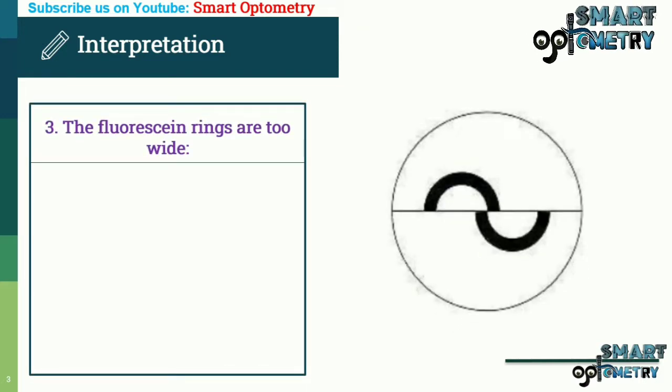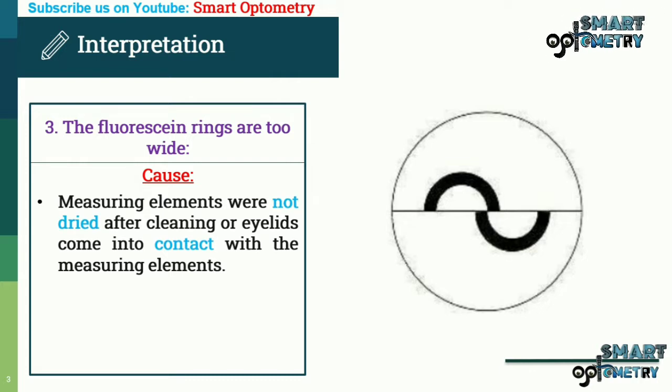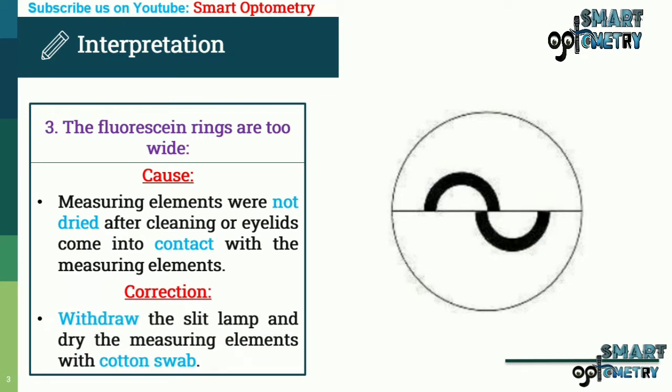Fluorescent rings are too wide. This is because the measuring elements were not dried after cleaning, or eyelids came into contact with the measuring elements. The correction is to withdraw the slit lamp and dry the measuring elements with a cotton swab.